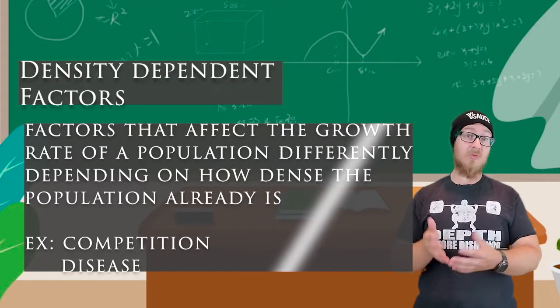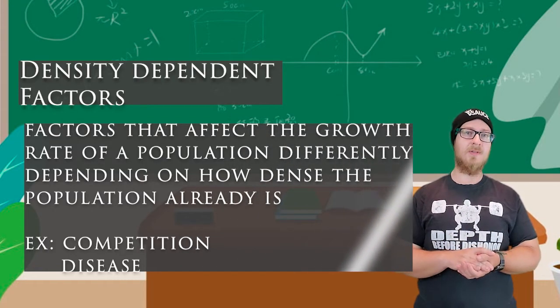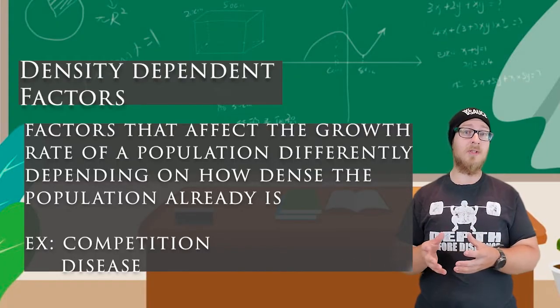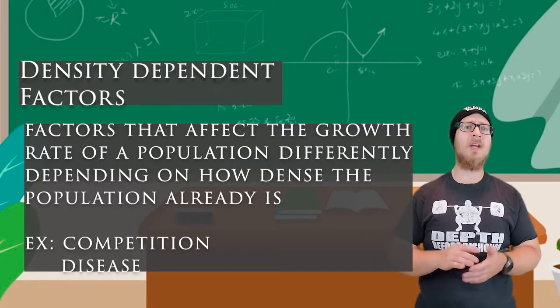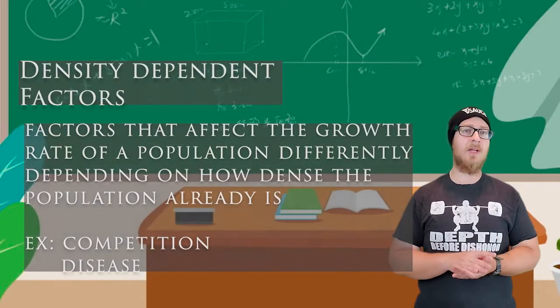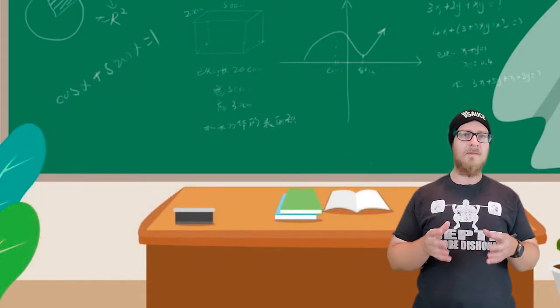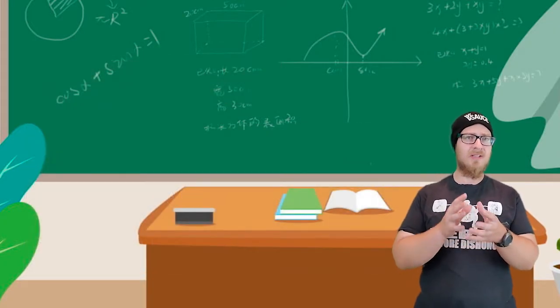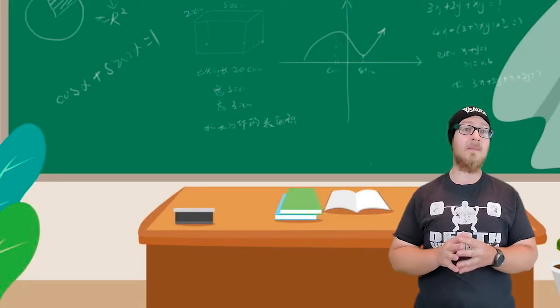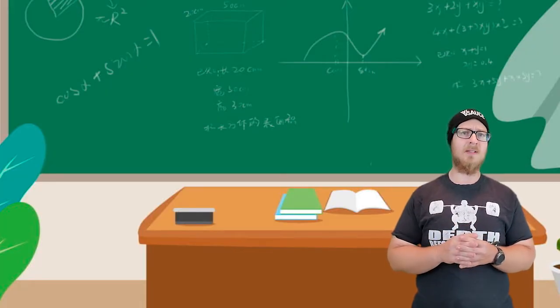The more individuals, the greater the competition for resources. And the more individuals live in close proximity to each other, the faster diseases can spread through a population. The effect of these population-limiting factors and the carrying capacity can also be represented on a graph.